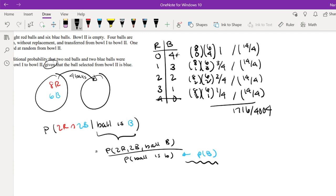Now to the numerator. Because I just added all of these up. So the numerator is just the probability that it is 2 red, 2 blue, and the probability of ball being blue.